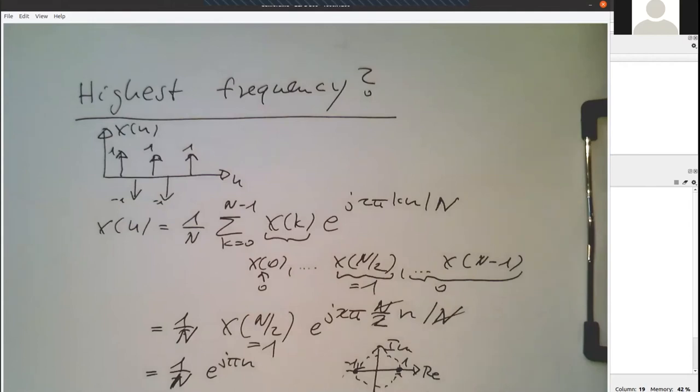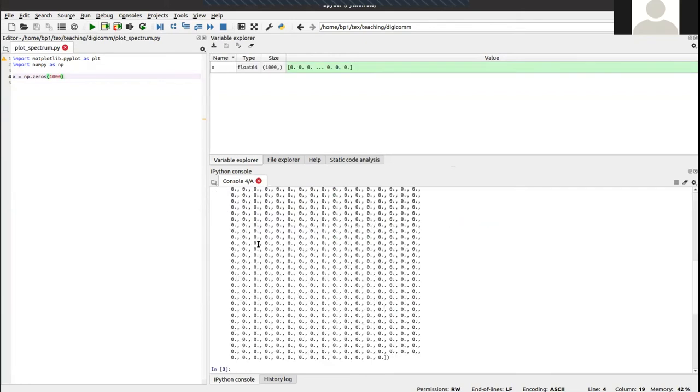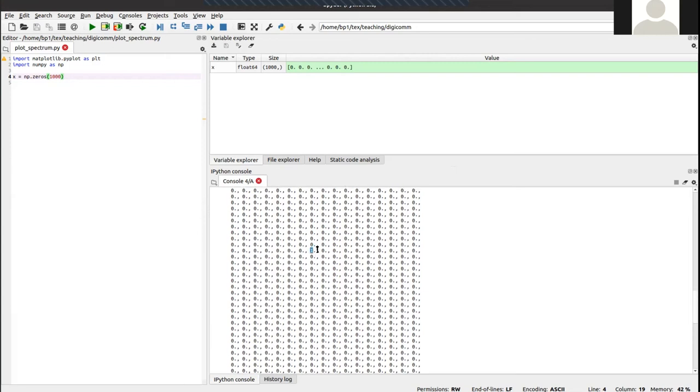Just need to check if this works. Let's create again loads of zeros. There we have them. Now I just need to create basically a one in the middle, so length of x divided by two, and we set this to one.